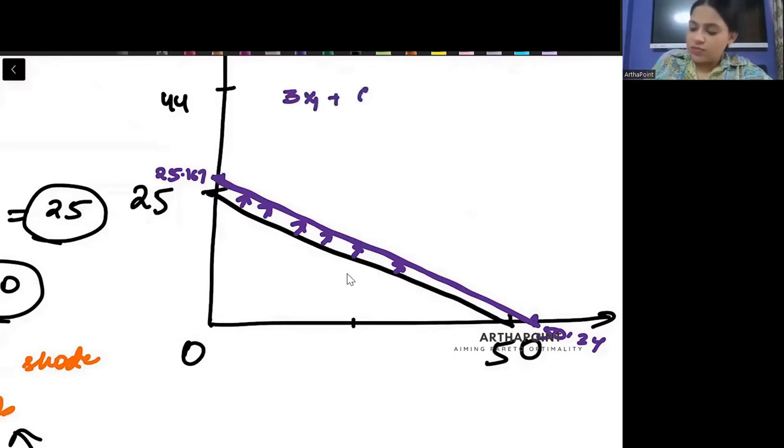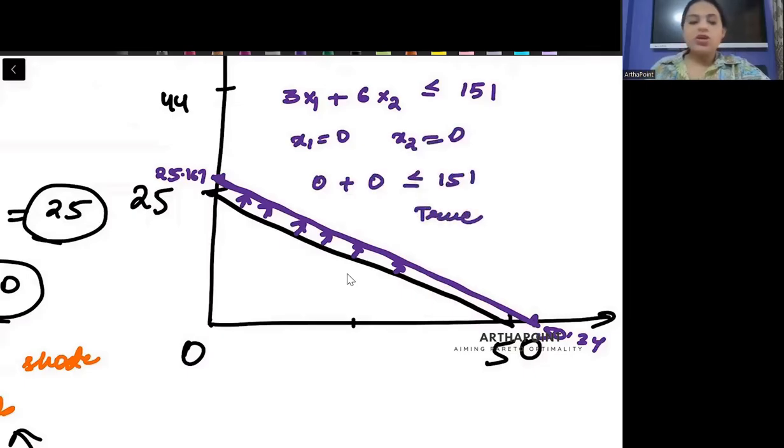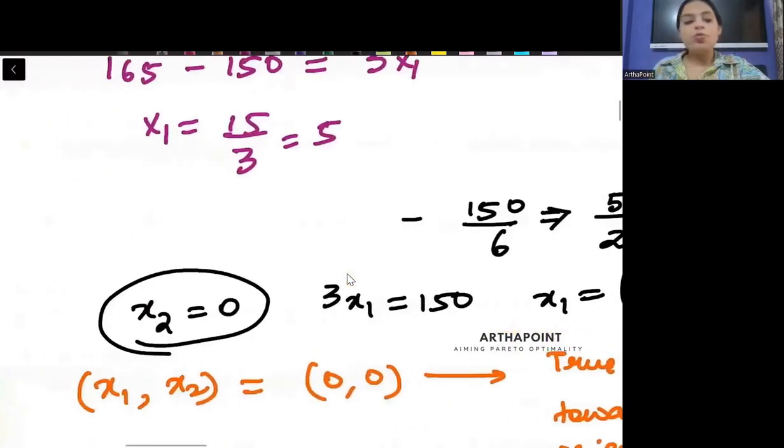My equation is 3x1 plus 6x2 less than equal to 151. But I will put again x1 as 0, x2 as 0 and I will get 0 plus 0 less than equal to 151. So this is true now. When you will see that this is true, you will shade towards the origin. You will start shading towards the origin with respect to the new purple line now.